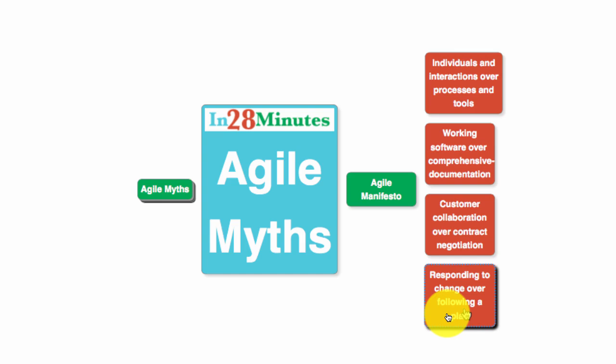The last one is responding to change over following a plan. The importance is given to adapting to change. Software is all about change — technology, requirements, everything keeps changing over a period of time. So Agile focuses on responding to change over following a plan. This kind of gives you the broad framework of the mindset you need to have when you are adopting Agile.